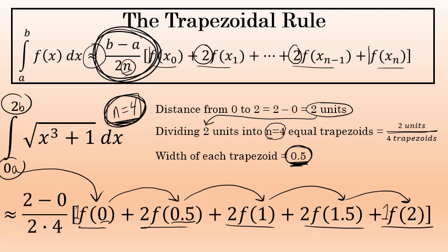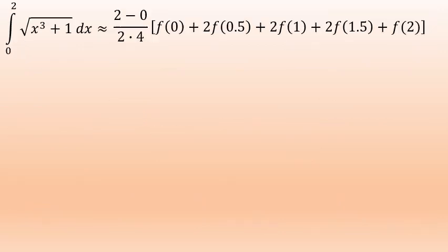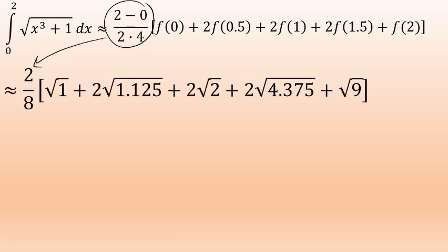Once you have this expression written down, the rest is arithmetic. The fraction 2 minus 0 over 2 times 4 simplifies to 2 eighths. Evaluating f of 0 means putting 0 for x: 0 to the third power plus 1 gives the square root of 1. The second term is 2 times f of 0.5: 0.5 to the third power plus 1 equals 1.125, whose square root we'll take in the next step. Most of these square roots are going to be irrational.